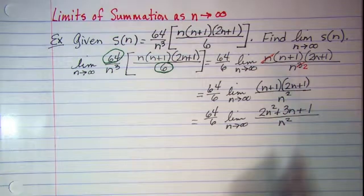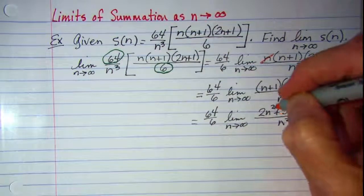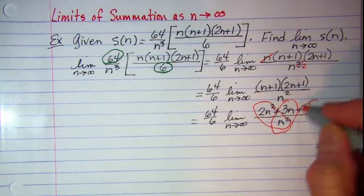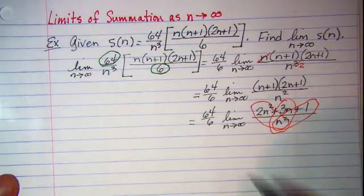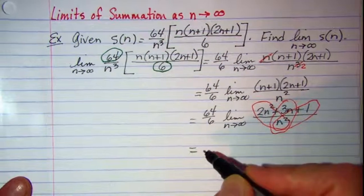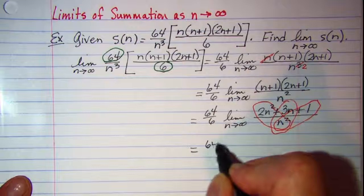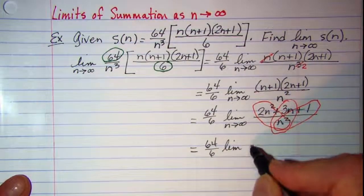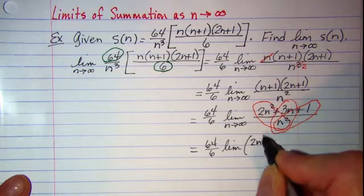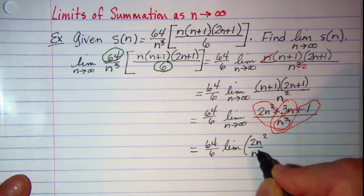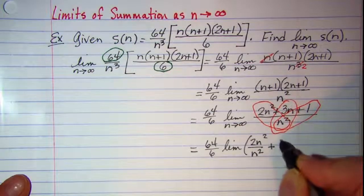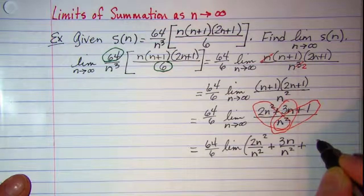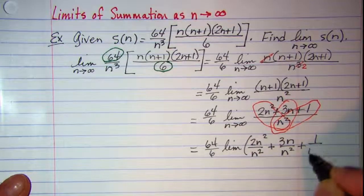Now I'm going to divide this up into 3 separate terms. So I have 64 over 6 times the limit of 2n squared over n squared plus 3n over n squared plus 1 over n squared.